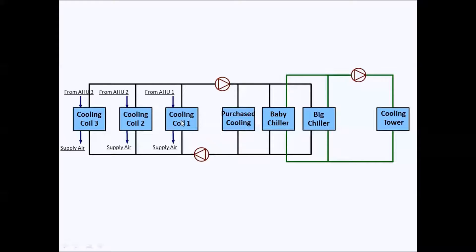Chilled water would be coming from three different sources: purchased cooling district cooling, small constant COP chiller we'll name BB chiller, and a big electric chiller named big chiller. These three would be providing chilled water to these three different AHUs. These two chillers, baby chiller and big chiller, a cooling tower will be connected to these two to serve as a condenser for these chillers.